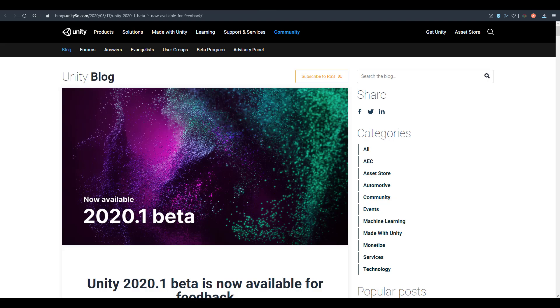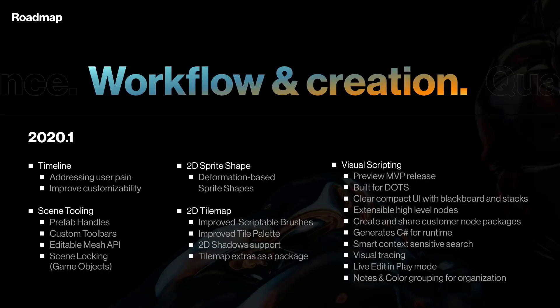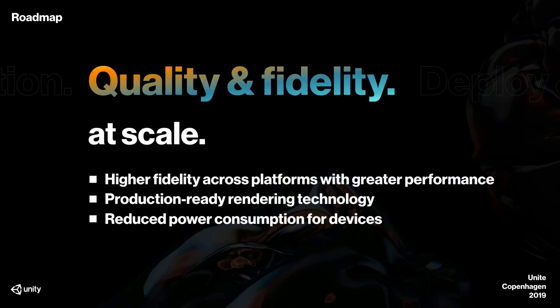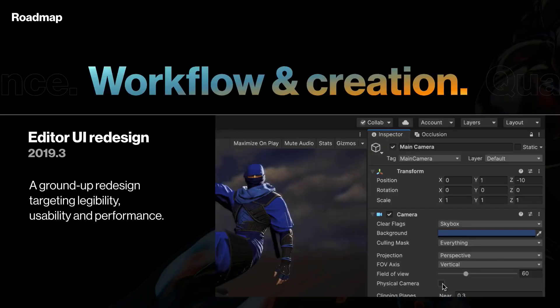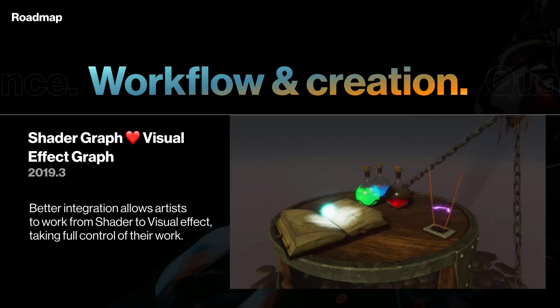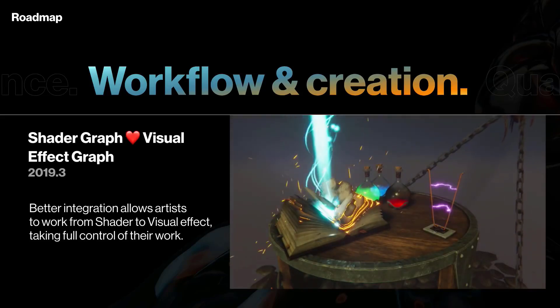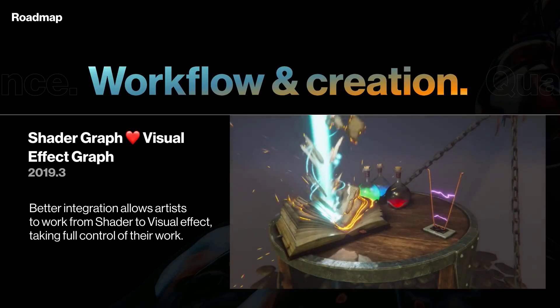A lot of features are coming to Unity, most targeted towards performance, reliability, creative workflow, and scalable quality. Many of these have been under research and development for a while, and some are now fully implemented. These include the Shader Graph, the 2D tools, the Visual Effects Graph, and the HDRP, which is currently out of preview and production ready.